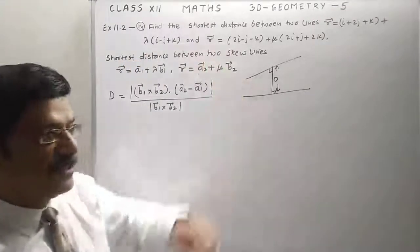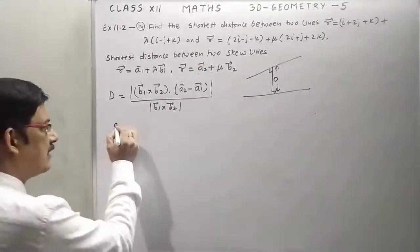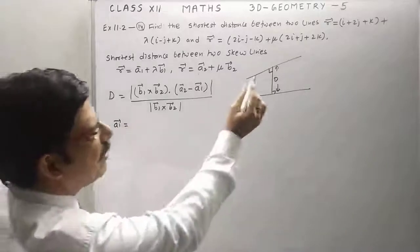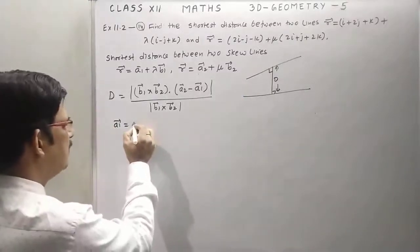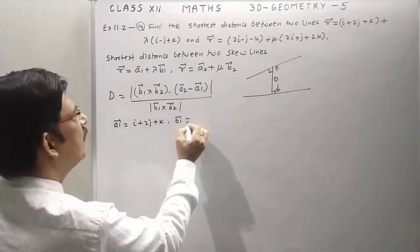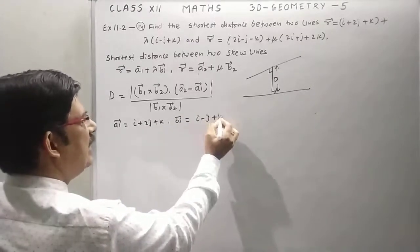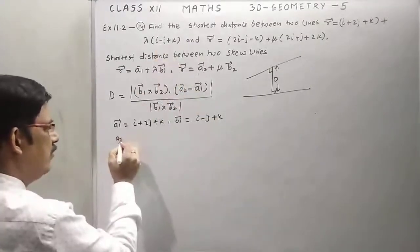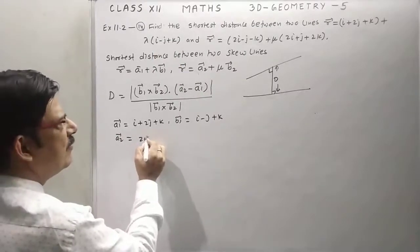Now let's take an example: find the shortest distance between these two lines. First of all we will compare this. You can see a1 is the point, that is i plus 2j plus k. b1 is equal to direction ratio of first line given.